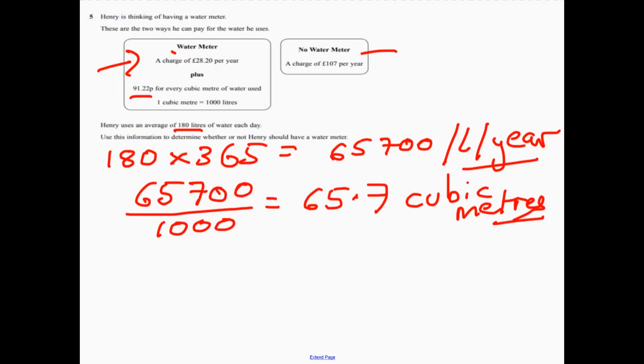We know that it's going to be 91.22 pence for every cubic metre. Now, this is something to be a little bit careful of here because actually I'm going to change that 91.22 pence to pounds because everything else is in pounds. So I've got 0.9122. And then if I work that out, that gives me 59.93.